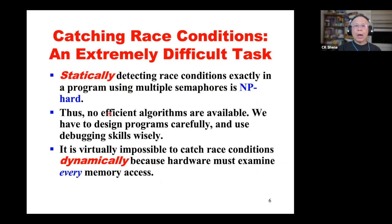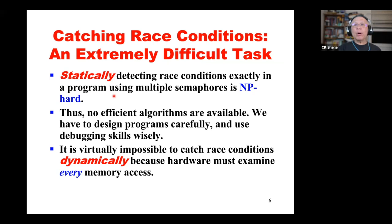When you debug your program to find bugs, you can either detect them statically or dynamically. For example, a compiler can statically detect a race condition — meaning we could write a program, like a compiler, that scans your source program and reports where you may have a race condition, pinpointing exactly where race conditions exist with respect to certain shared resources.